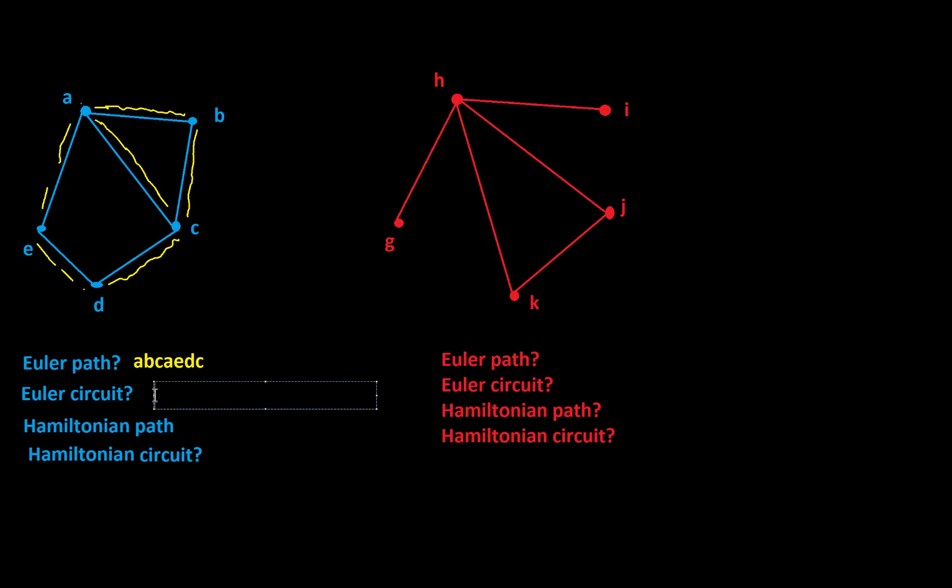Does this have an Euler circuit? Well, the answer is no. And the reason is because I started at one vertex and ended at a different one, and there's no way to start and stop at the same vertex. You can give it a try, but you'll find that one does not exist. And I'll give you some characterizations that you can use to quickly decide if a graph has an Euler path or an Euler circuit.